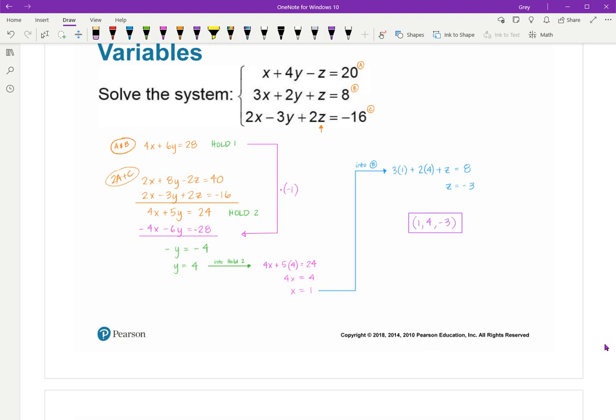So my ordered triple is 1, 4, negative 3. You always put it in alphabetical order, whatever these variables are. A, B, C, M, N, P, whatever you have. When you write the final answer, it's always in alphabetical order. So that's why it's 1, 4, negative 3.